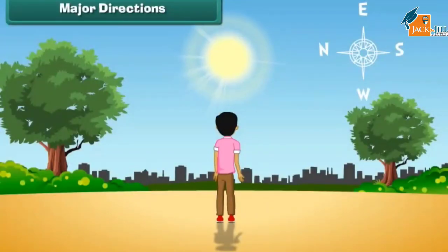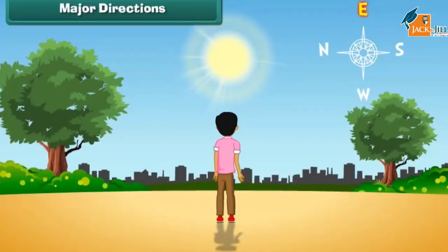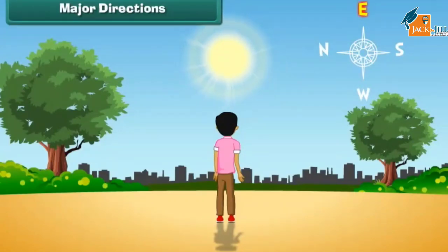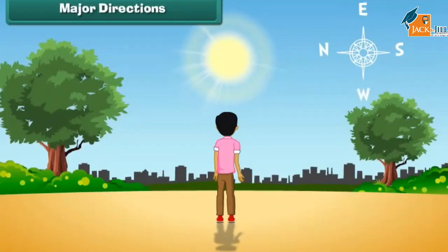This is Jay. He is standing facing the sun. The sun rises in the east. Therefore, east is in front of him. It means west is behind him, north is to his left, and south is to his right.